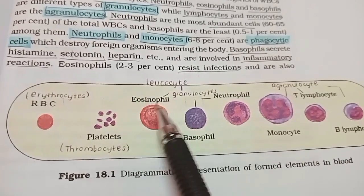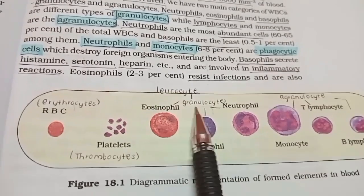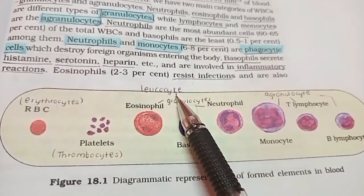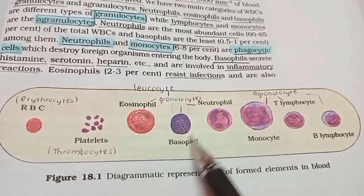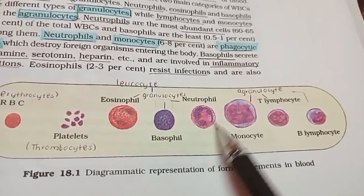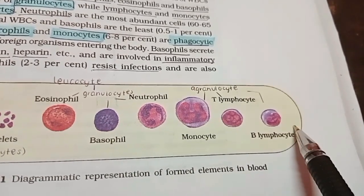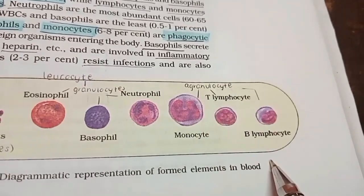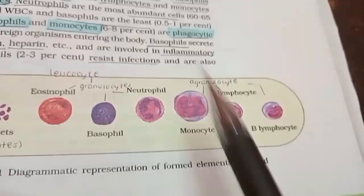Eosinophil — I don't know how to pronounce it — is in the category of leukocyte, and within leukocyte it's under the category of granulocyte. We also have basophil which is purplish in color, neutrophil which looks like a candy, monocyte, and lymphocyte. Lymphocyte has two types — T and B lymphocyte — and it comes in the category of agranulocyte in leukocyte.